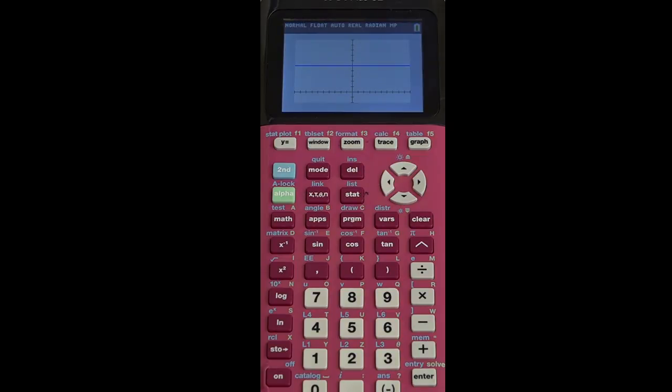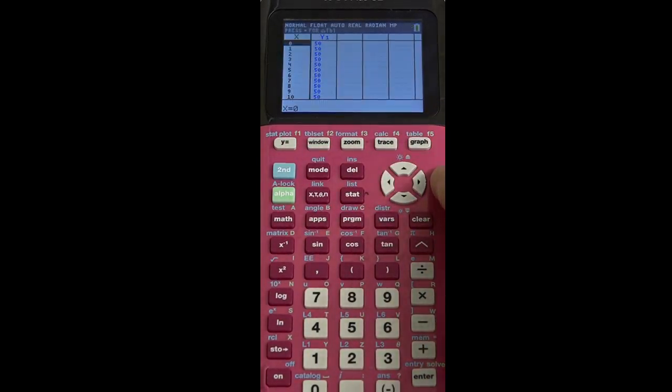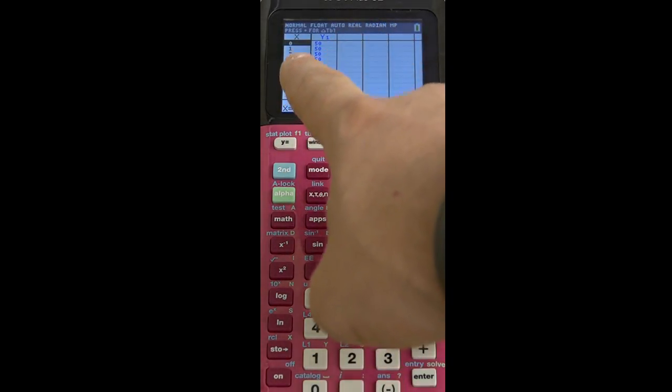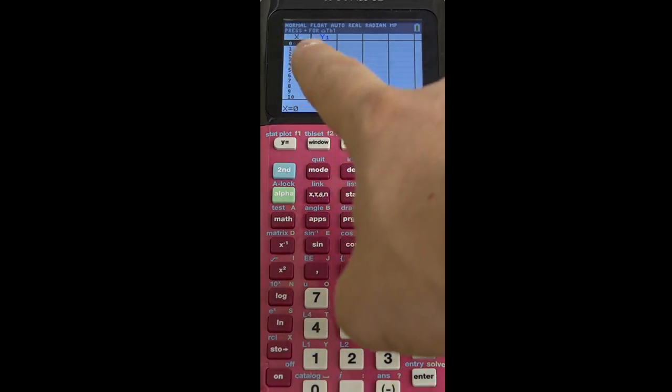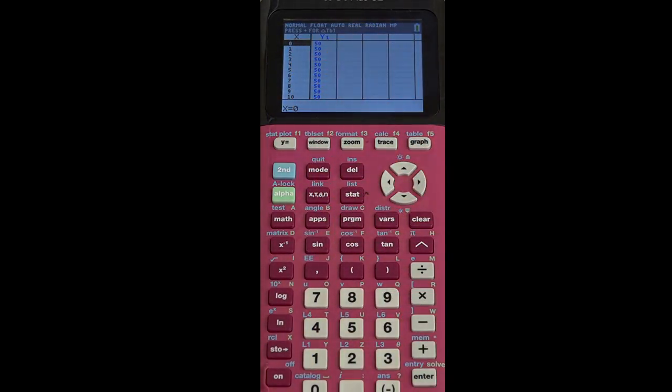Now what is sometimes confusing to people is this table feature. So if I press second graph, I get a table feature. And now mine is set up to show me all these different x values and all these different y values. Now you may be confused by that because yours might not be the same. And where do you think we look to set up our table to make it do like we want it to do?